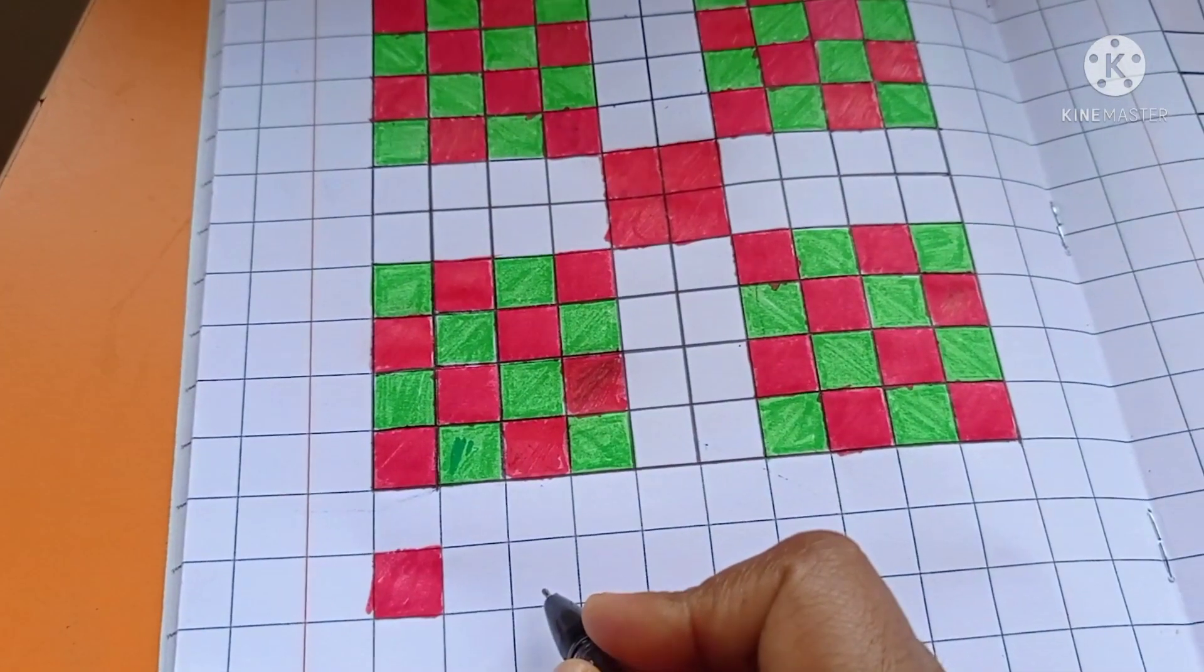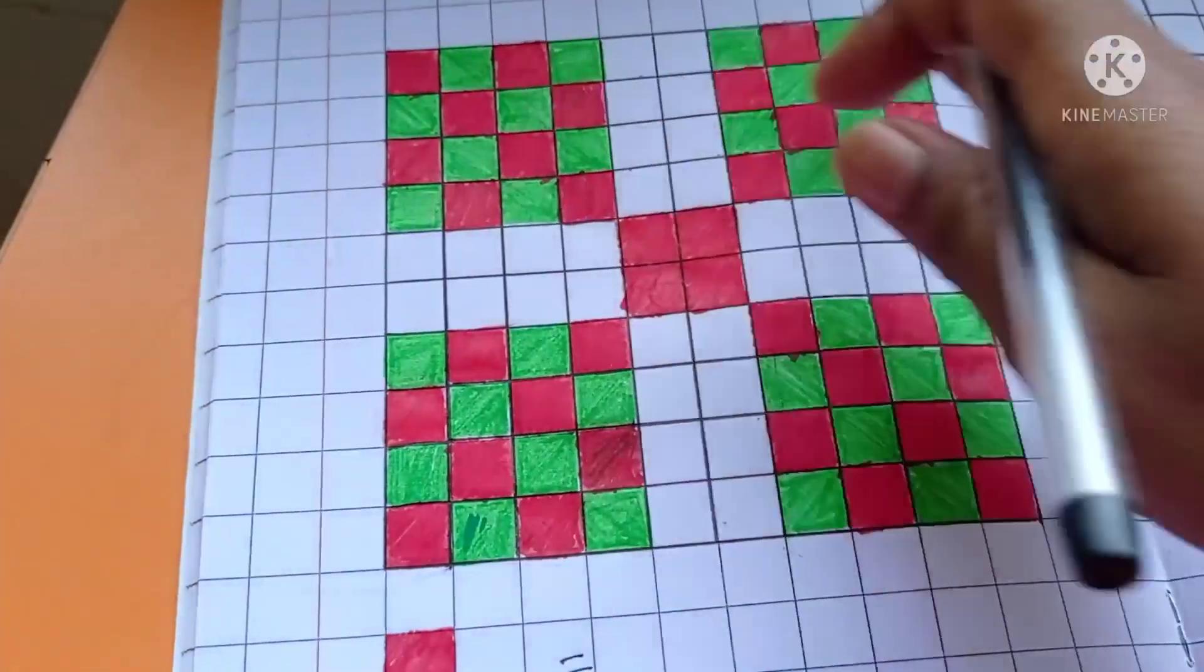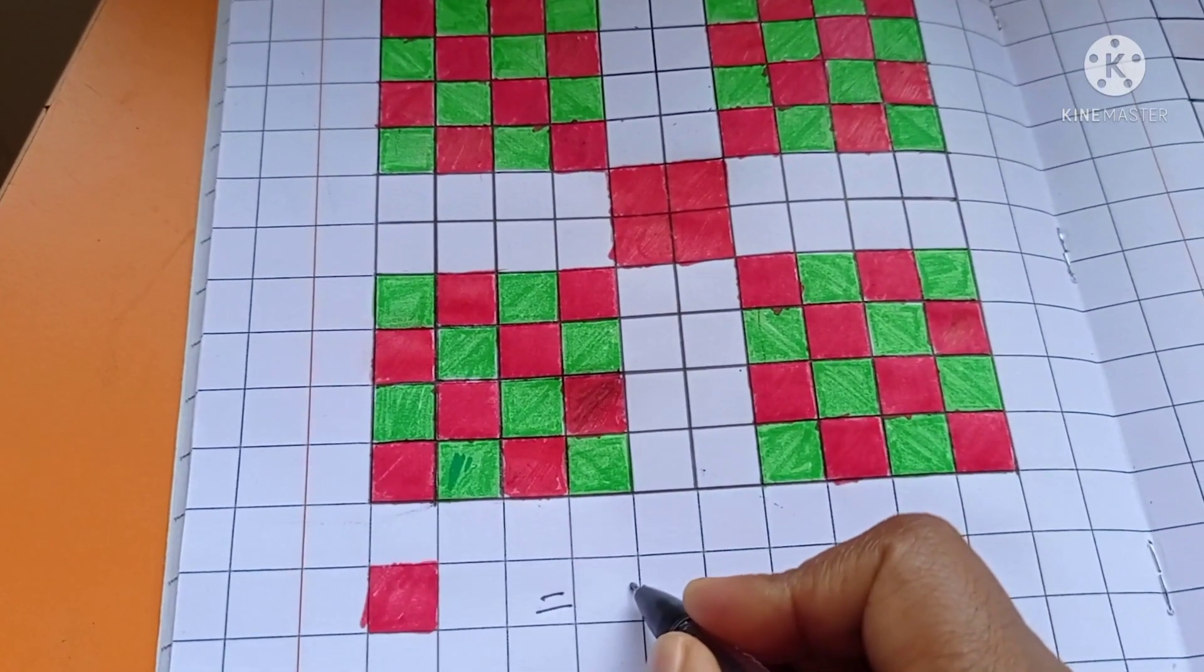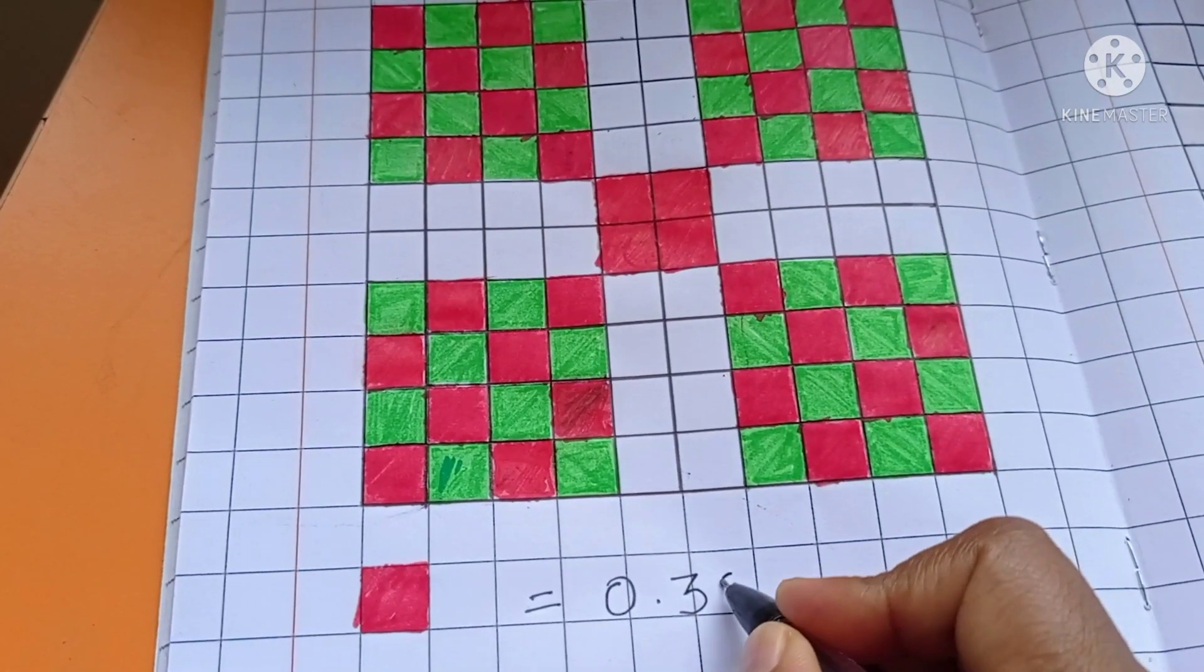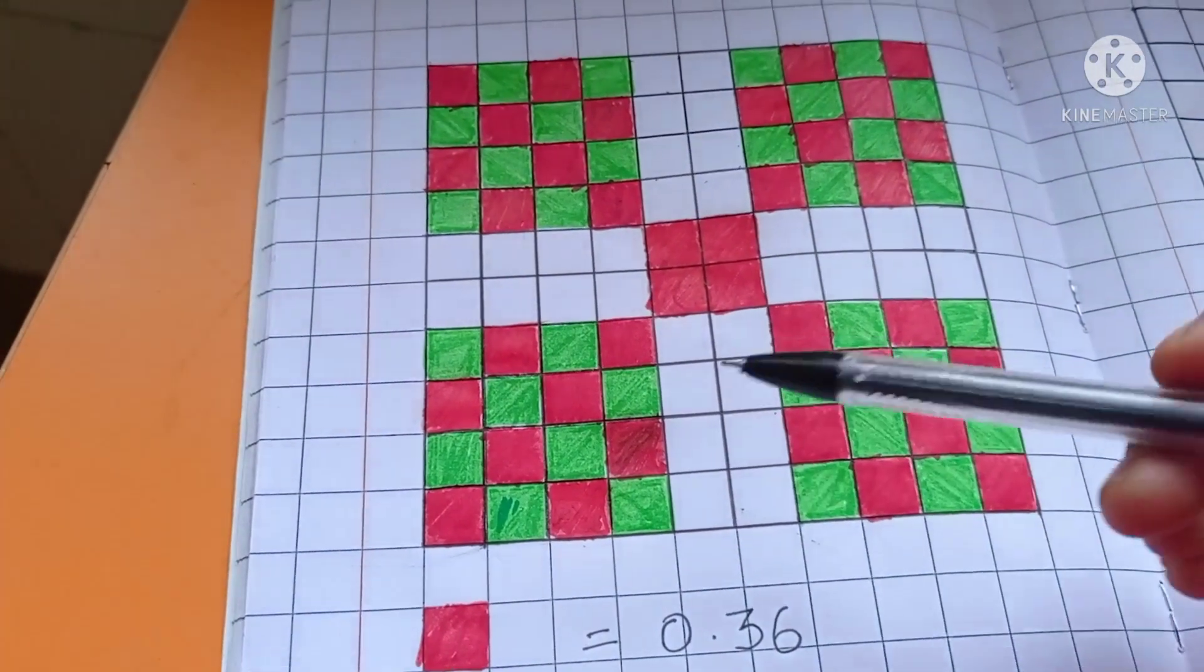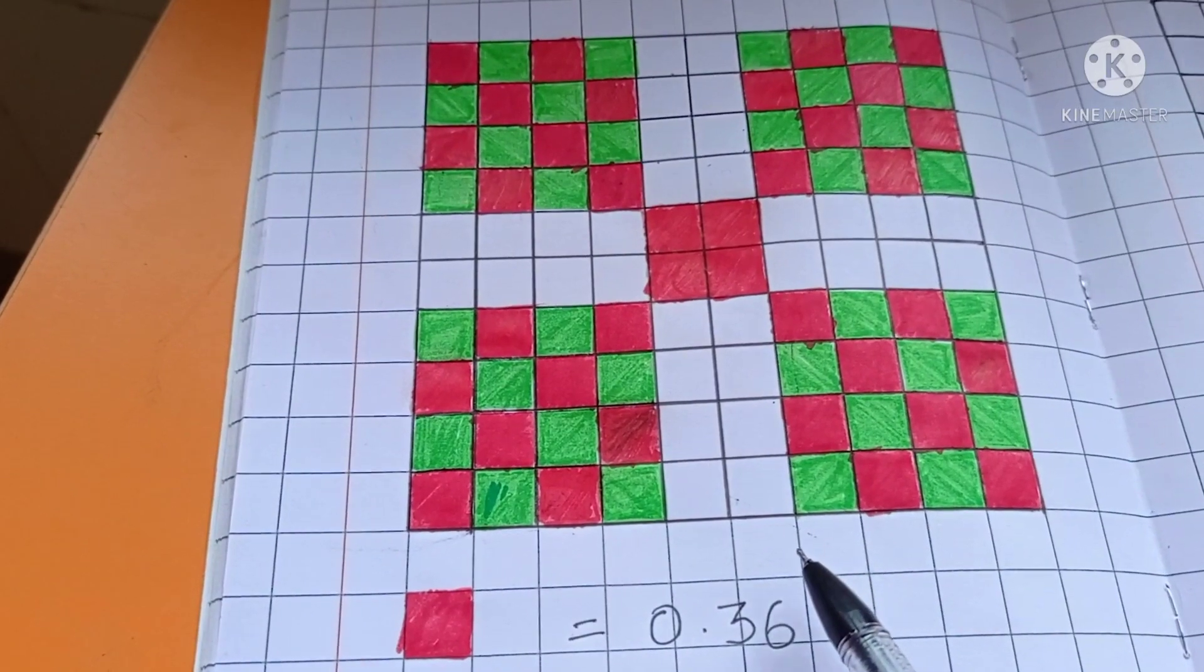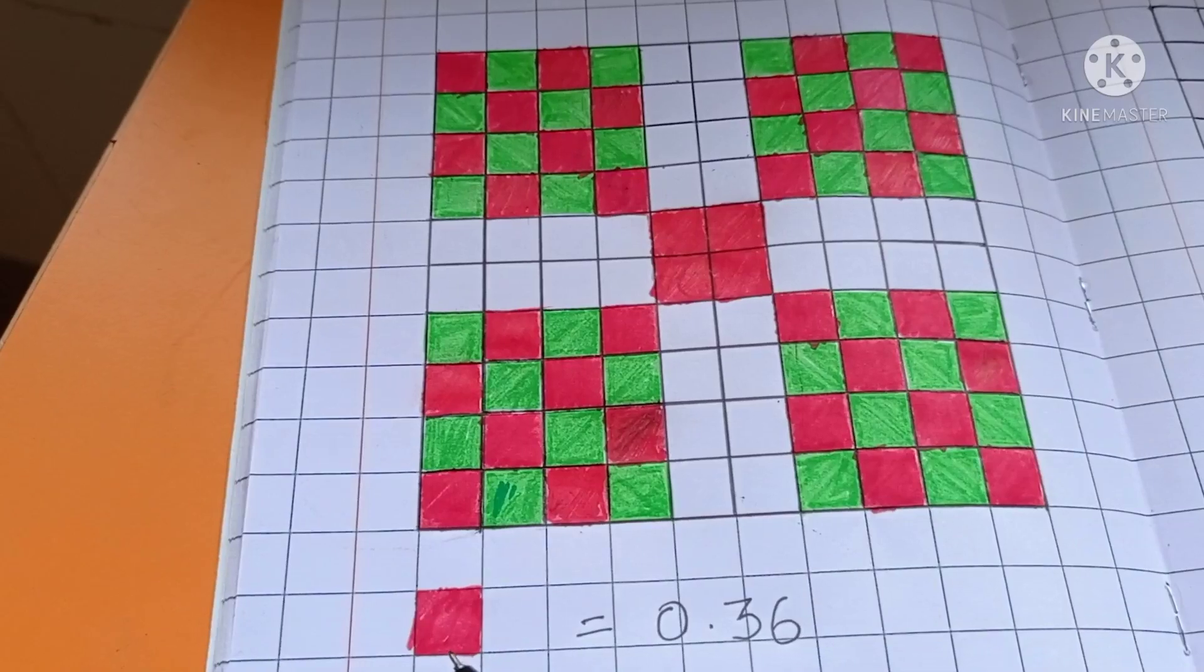36, how to represent in a decimal? Total parts are 100. So 36 we have to represent 0.36. The whole thing has divided into 100 parts. In that 100, 36 squares are shaded in red.